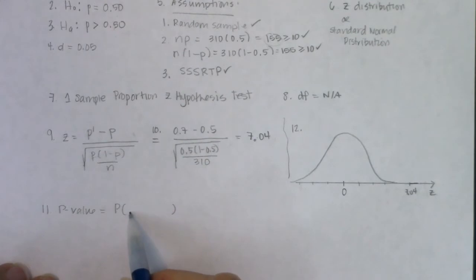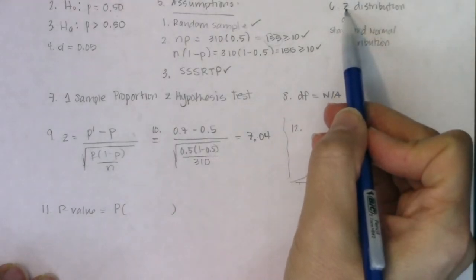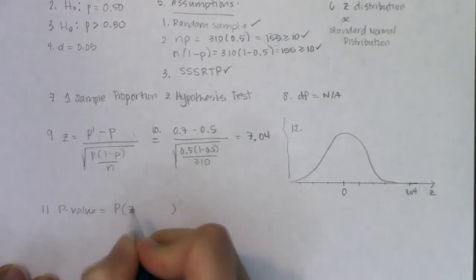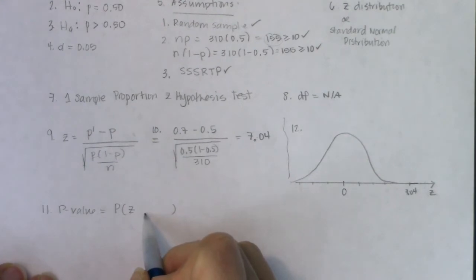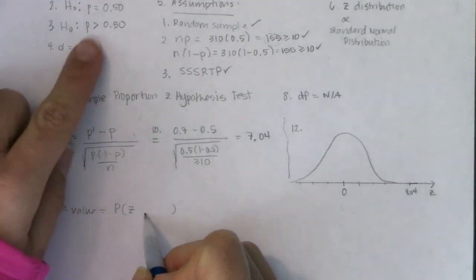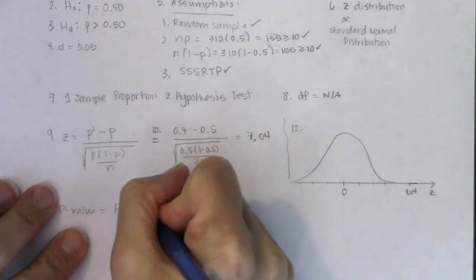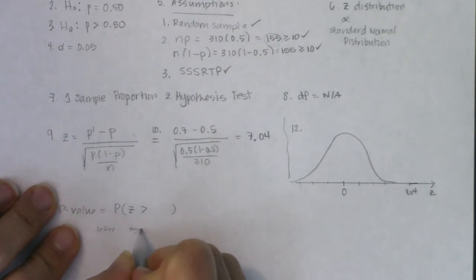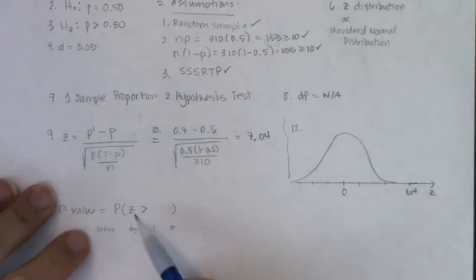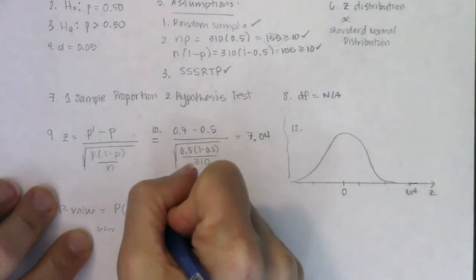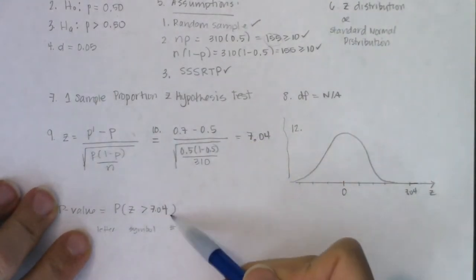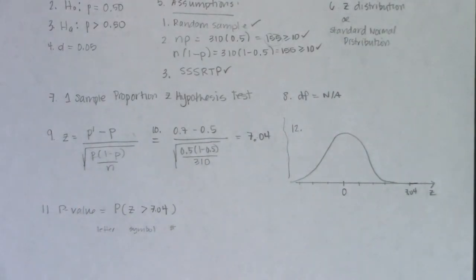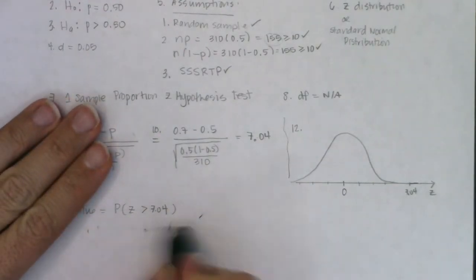For step eleven, the p-value is written as: P(z > 7.04). The letter is z, the symbol is greater than, the number is whatever you got in step ten. That's why step ten comes before step eleven. Normal CDF with low = 7.04, high = 1e99, mean = 0, SD = 1 gives us approximately zero.